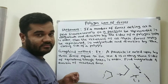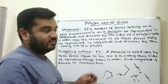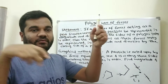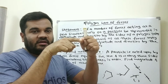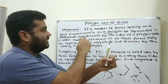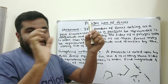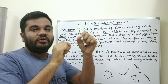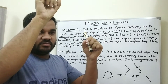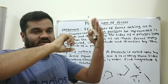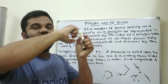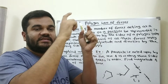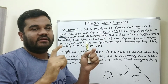You want to close the polygon — the unclosed position is there, you just close it. Whatever closing force you get, that is the resultant force, and its direction is whatever you are getting with respect to the horizontal or vertical.